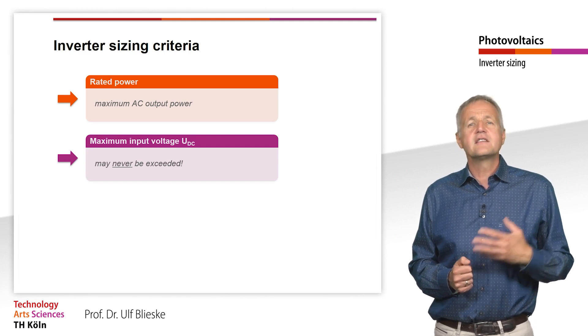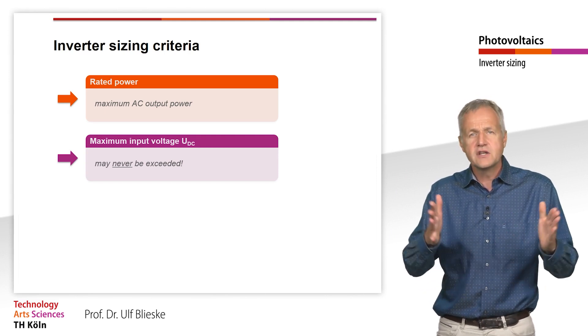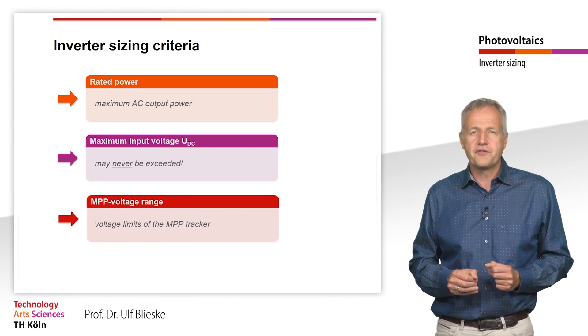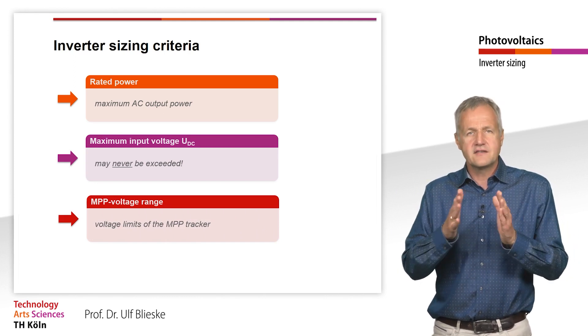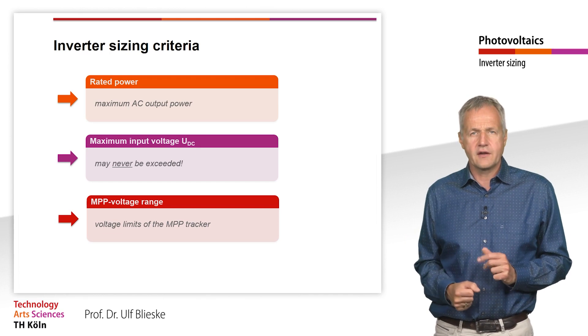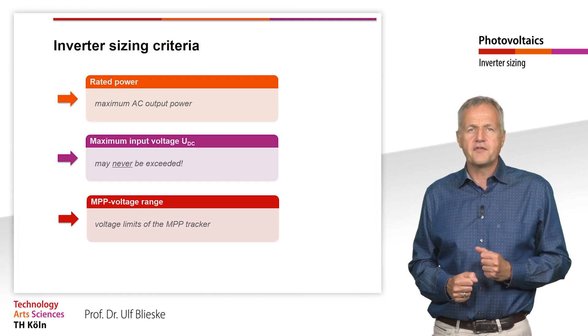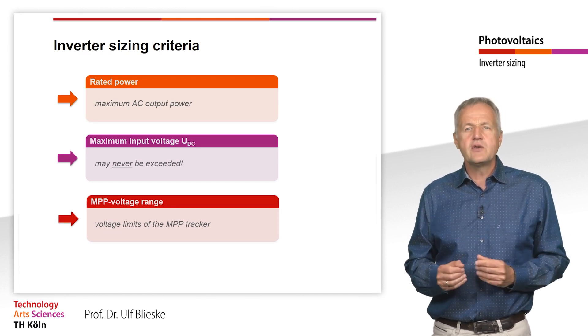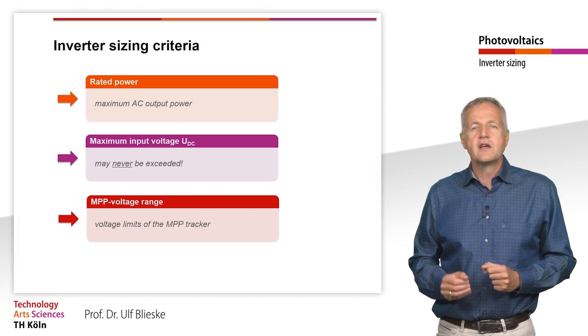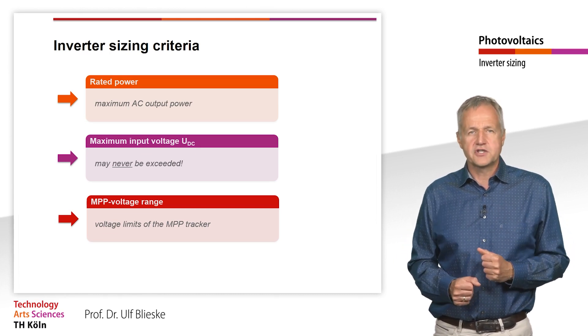This is the only criteria that can lead to the destruction of the inverter if it is incorrectly sized. In addition, there is a certain input voltage range in which the MPP tracker of the inverter can find and set the MPP of a string. The MPP of the solar generator should be within this voltage range in all operating conditions.